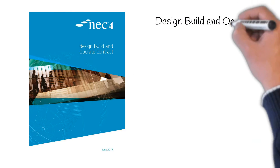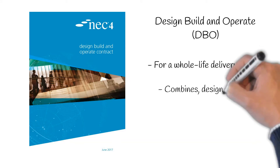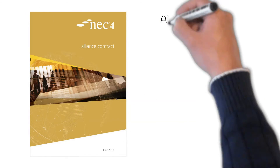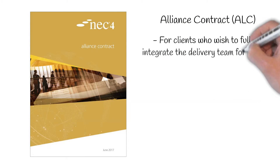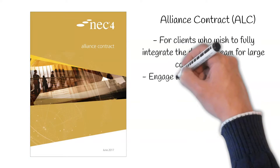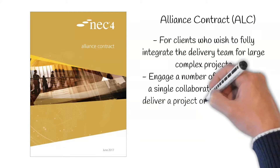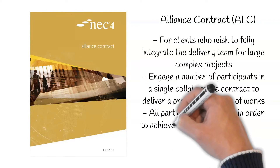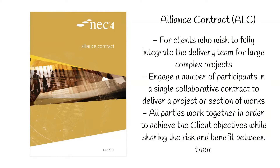Design, Build and Operate, or DBO. This allows for a whole-life delivery solution. It combines design, build, and maintenance responsibility for a single contractor. Alliance Contract, or ALC. This is designed for clients who wish to fully integrate the delivery team for large, complex projects. The ALC is used to engage a number of participants in a single collaborative contract to deliver a project or section of works. The basis of this contract is all parties working together in order to achieve the client's objectives while sharing the risk and benefit between them.